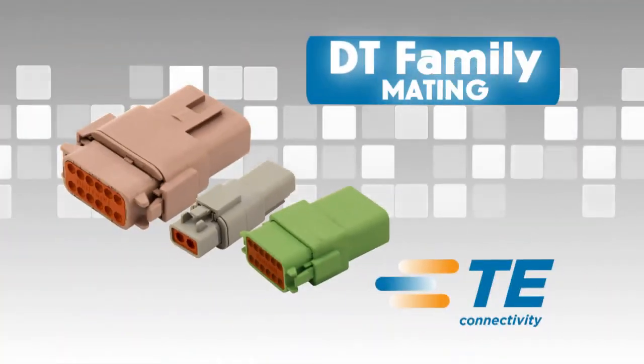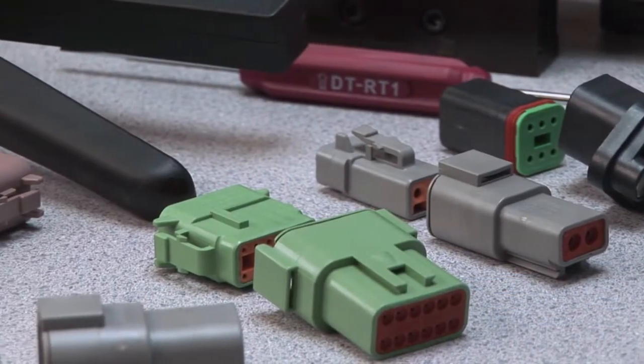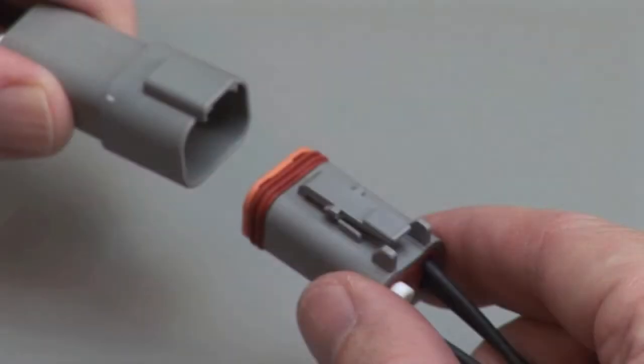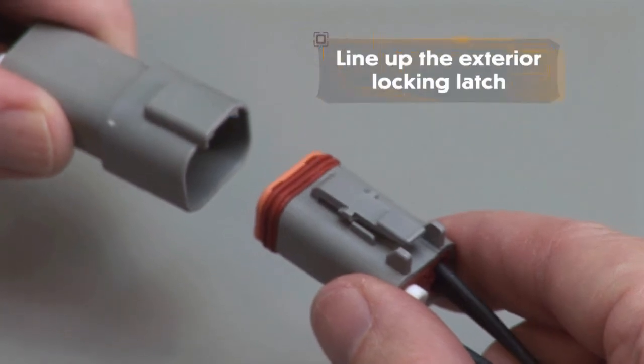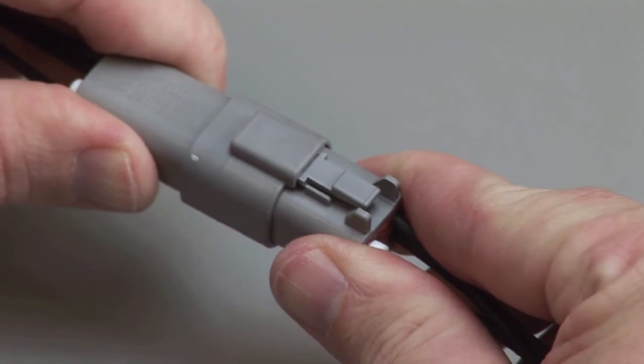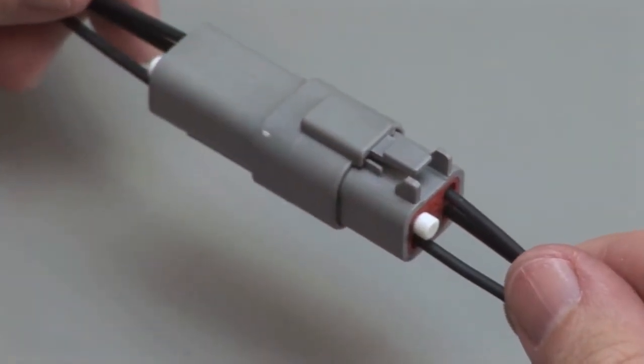DT mating. All DT connectors are designed to be mated and unmated by hand. When mating a DT series, grasp the connector by the connector body and line up the exterior locking latch. Push the plug and receptacle together until you hear a click and the exterior locking latch is seated in place.